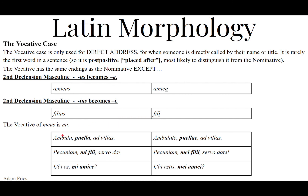Here are a few examples. 'Ambula' — an imperative singular — walk. You're ordering one person to walk. And who's that person? You call her by what she is: girl. 'Walk, girl, to the farmhouses.' Plural: 'Walk, ye girls, to the farmhouses.' Notice the vocative is offset by commas — offset it in your writing when you translate. 'Pecunia, mi fili, servo da' — money, my son, give to the slave. Give money to the slave, my son. The plural becomes: 'Pecunia, mei filii, servō date' — give money to the slave, my sons. The singular imperative becomes plural because we're talking to more than one person.